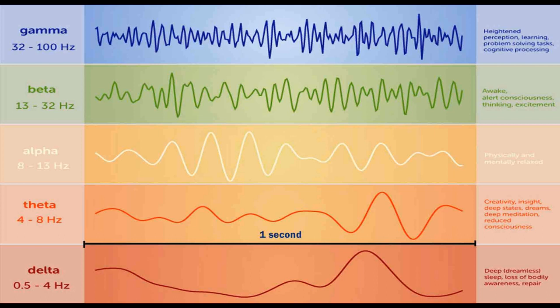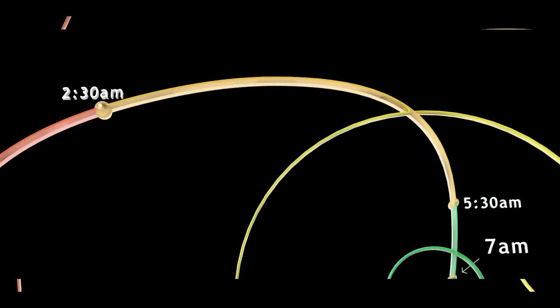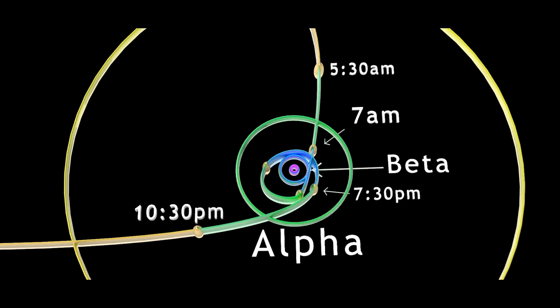Let's start from the moment we enter our deltaverse. A circadian rhythm properly tuned to nature will follow as so. From approximately 11:30pm to 2:30am, our primary conscious harmonic is the delta wave. From 2:30am to about 5:30am, we are in theta waves. Then from 5:30am to 7am, we are in alpha waves.